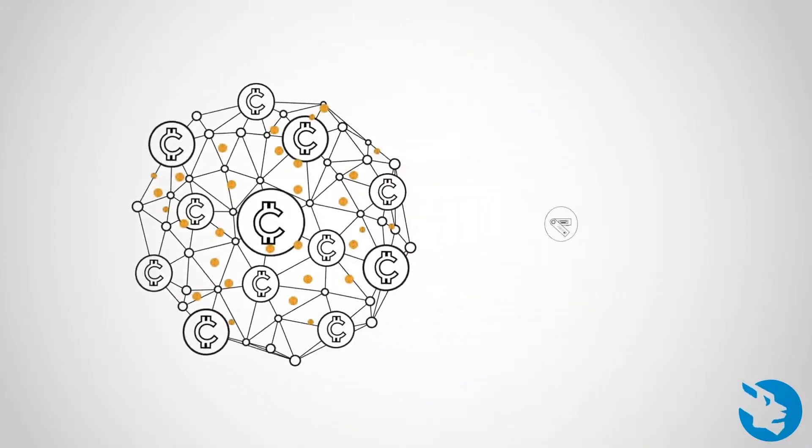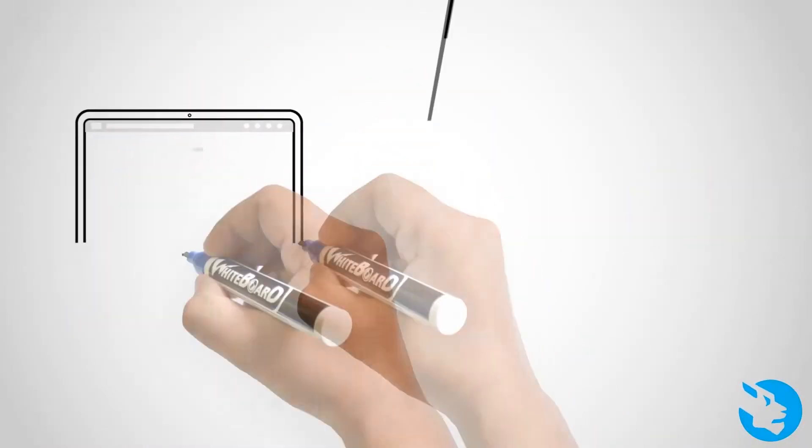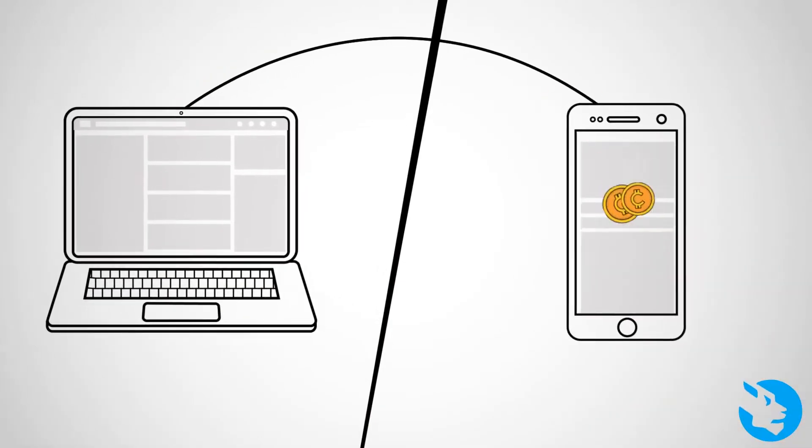Blockchain transactions are stored in a ledger accessible to thousands of computers around the world, which approve the legality of transactions, called consensus.